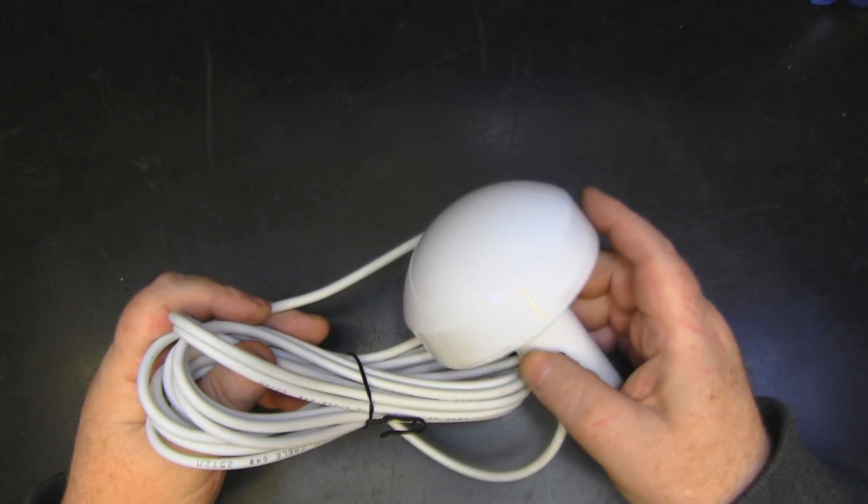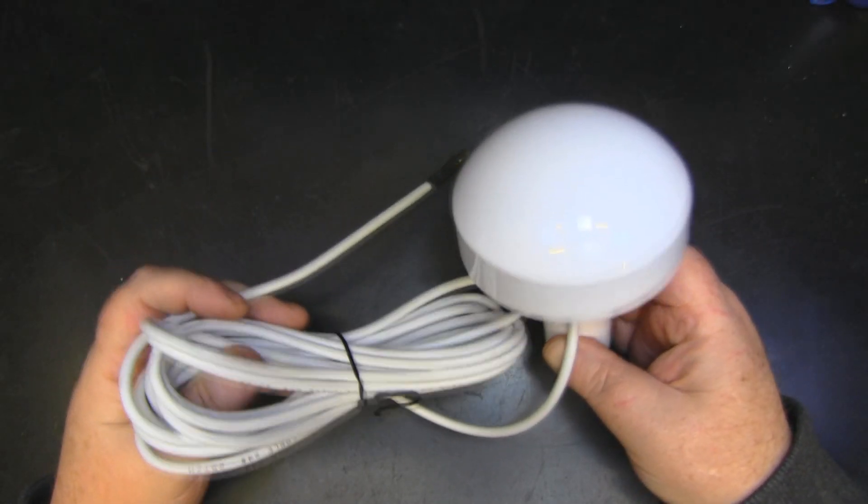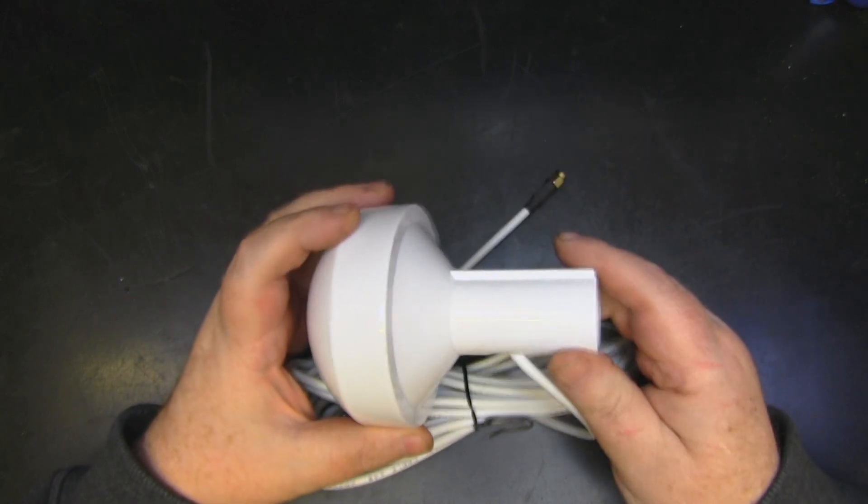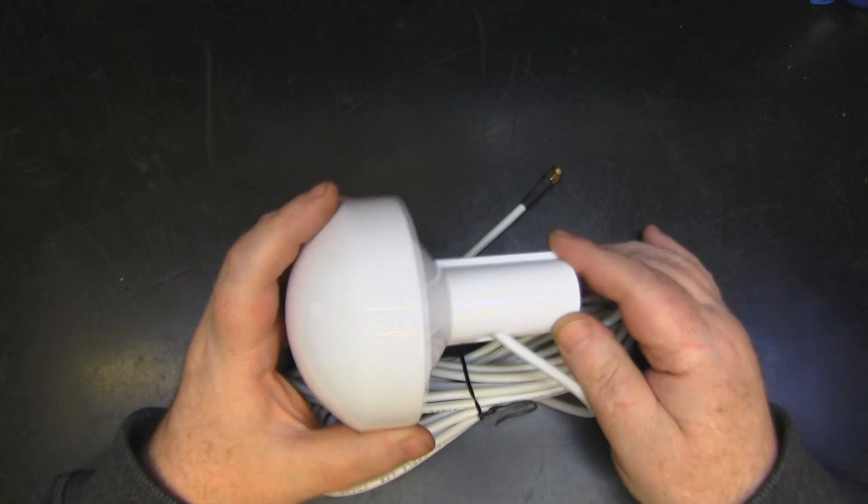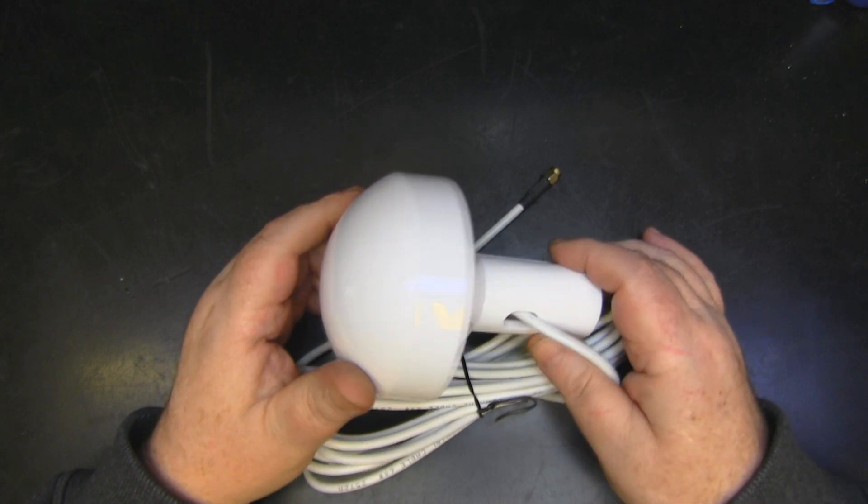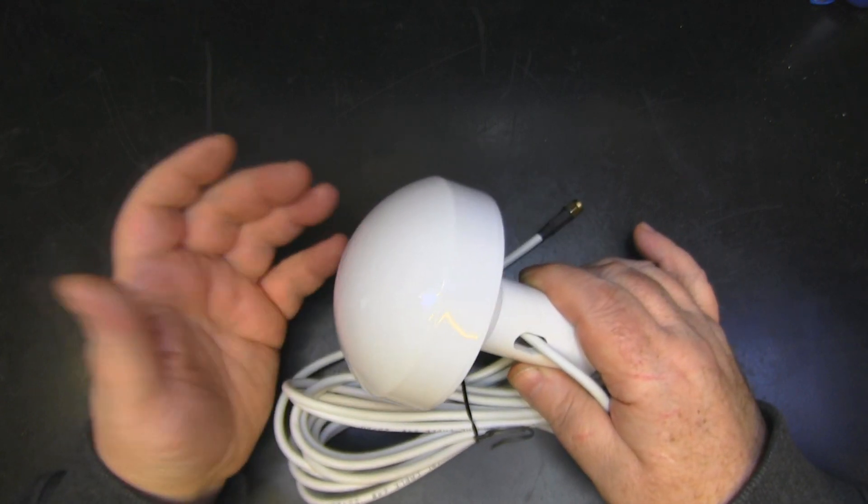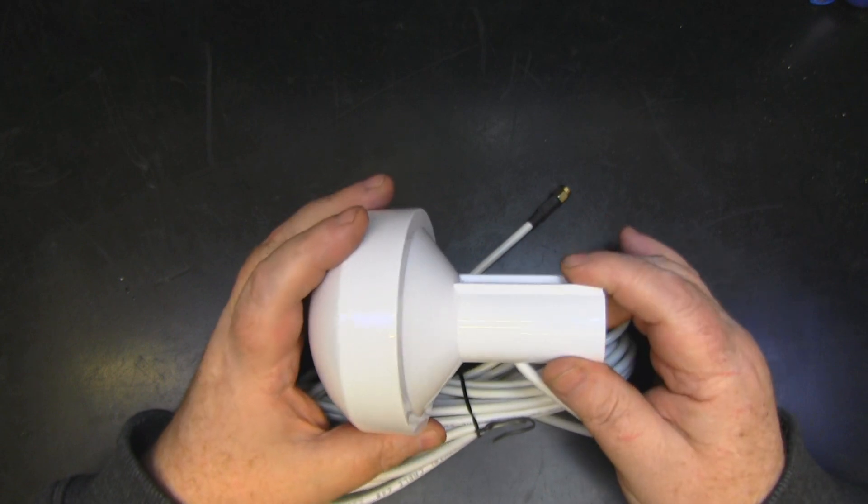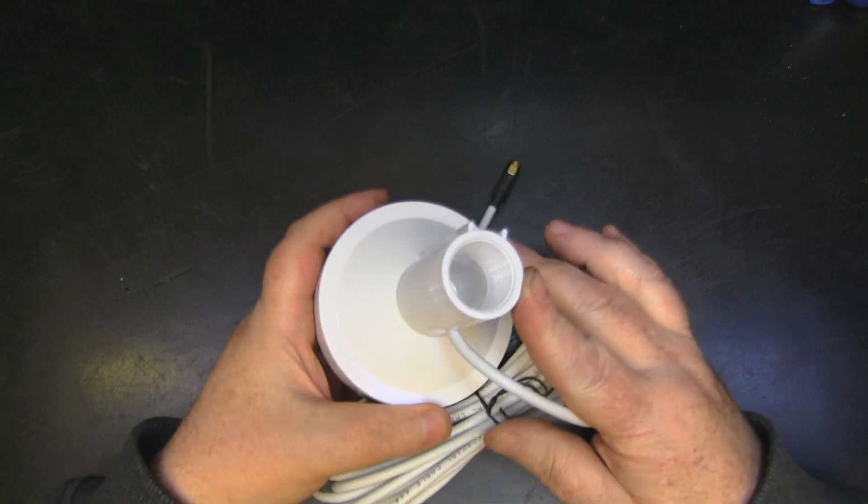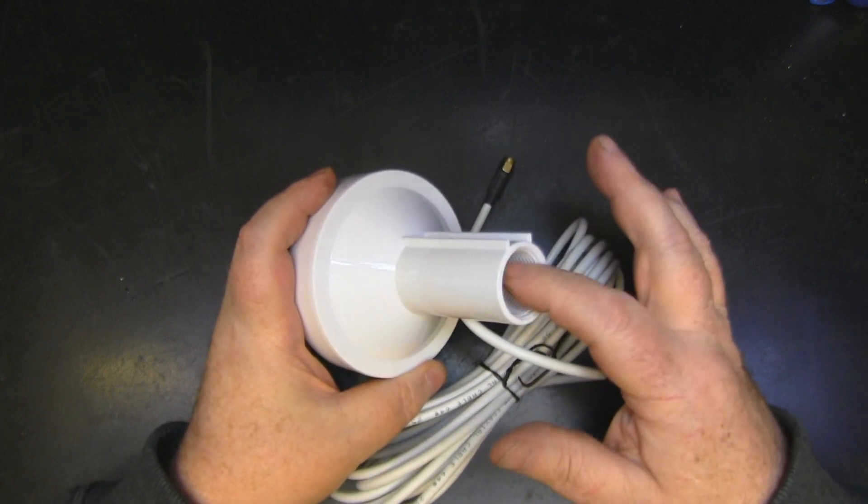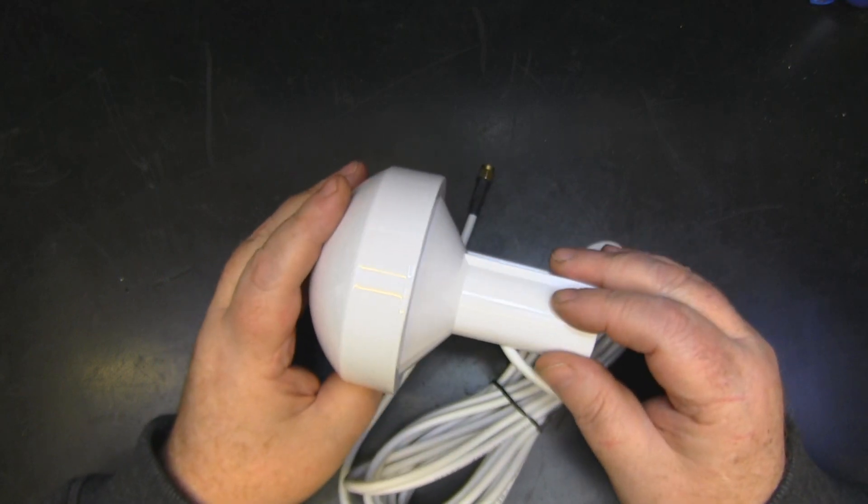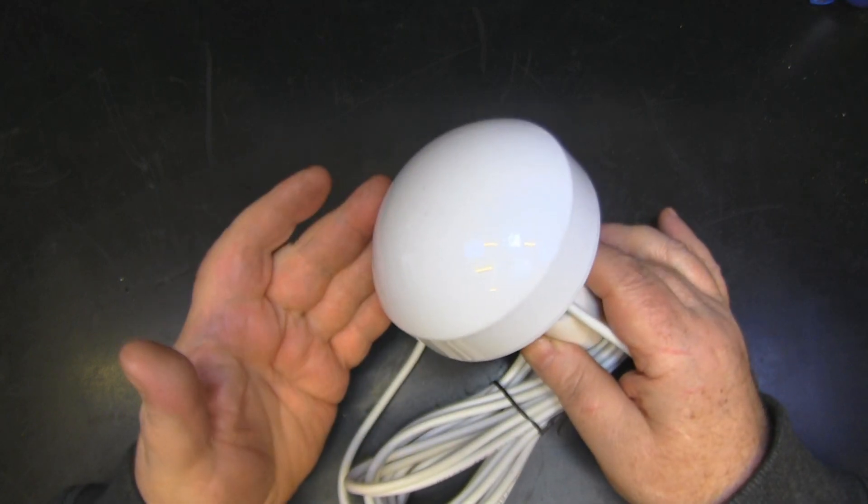On the bench today we have a GPS antenna. This antenna was sent in by a subscriber who accidentally bought two of these, so he contacted me and asked if I wanted one to take a look at here on the channel. Of course I said yes. I haven't taken a look at a GPS antenna before and they are interesting in their own right. This one is made to be used on a boat with screw threads to attach to the appropriate pole, but it also has a built-in amplifier.